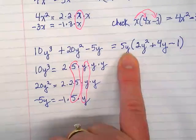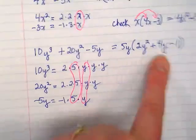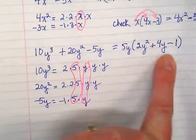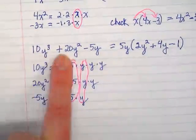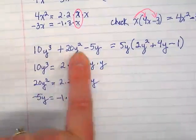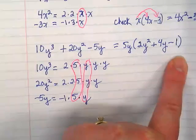And inside the parentheses should have the same number of terms as what we started with. This was a trinomial. So inside here it's going to be a trinomial.